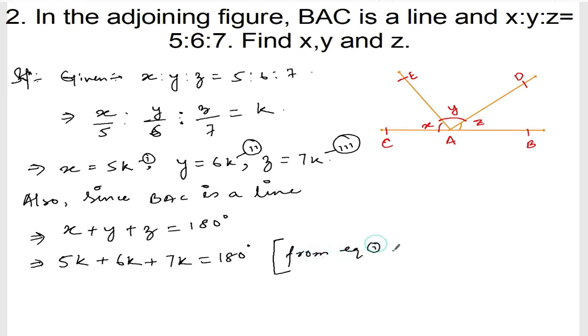Now 5 plus 6 equals 11, plus 7 equals 18, so 18k is equal to 180. And k is equal to 180 divided by 18, which equals 10. So k is equal to 10.